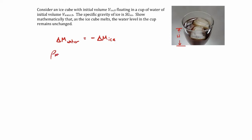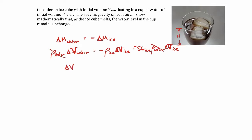So we'll have the density of water times the change in the volume of the water, equal to minus the density of the ice times the change in the volume of the ice. We'll write the right-hand side in terms of the specific gravity of the ice, since that's what we're given. Dividing through by the density of water, we get that delta V of the liquid water equals minus the specific gravity of the ice times the change in volume of the ice. This comes from a conservation of mass statement.